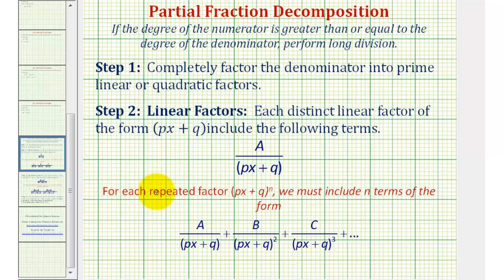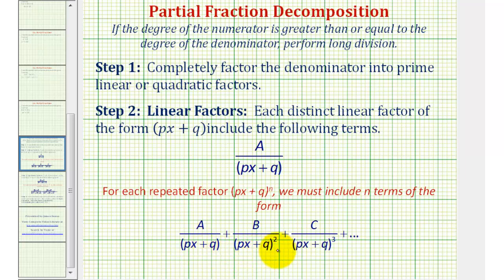If we have repeated linear factors in the form of the quantity px plus q raised to the power of n, we must include n terms in the form that we see here. Notice how we never use the same variable twice in the numerator. Looking at the denominator, notice how we start with a single factor of the repeated factor, and then we pick up one additional factor in successive fractions until we have all of them.